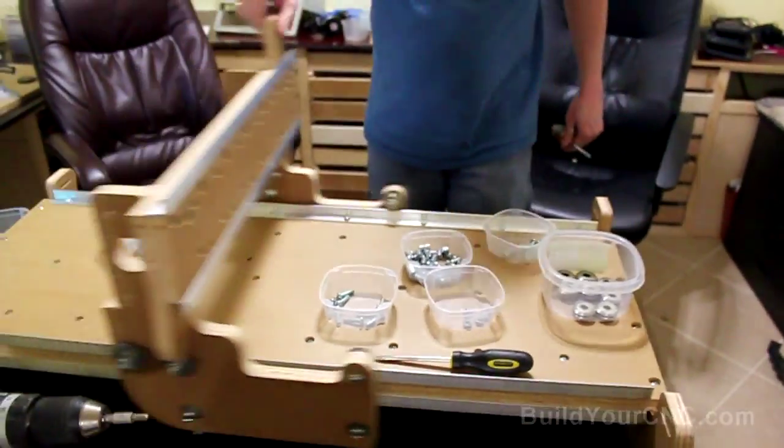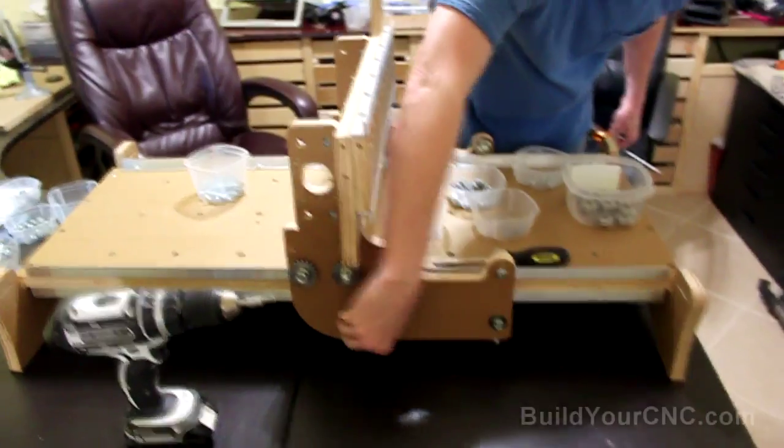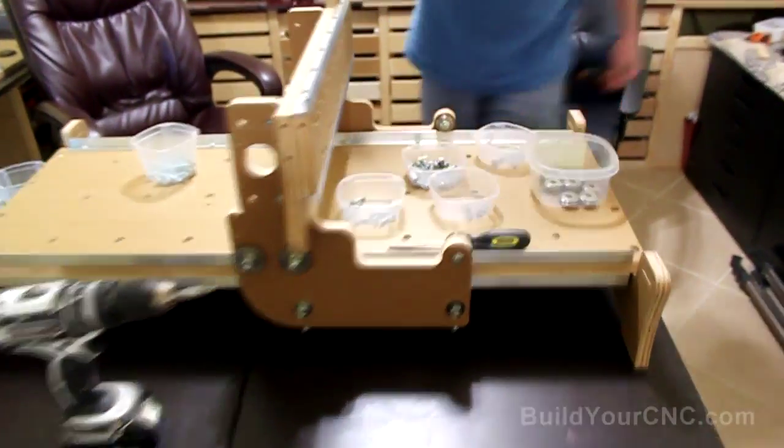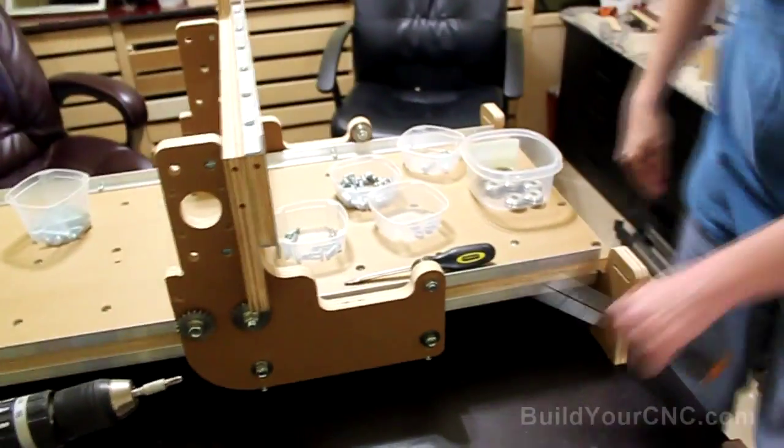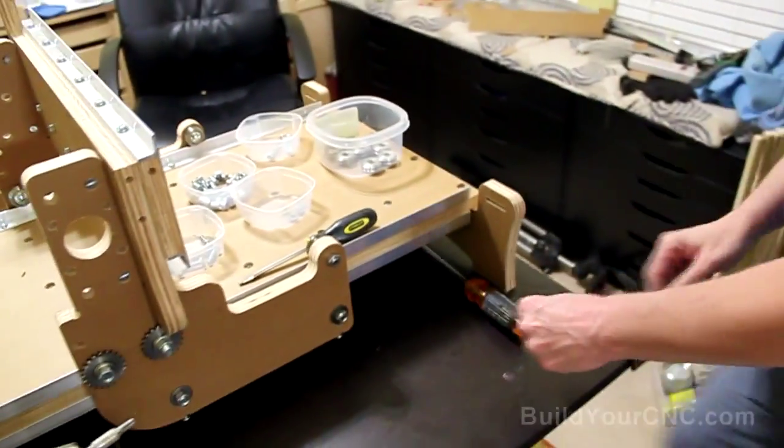Okay. Okay, so now they're all tight, you can now go ahead and tighten up the bottom bearings onto the rail if they haven't been done so already. And they may actually be too tight because,